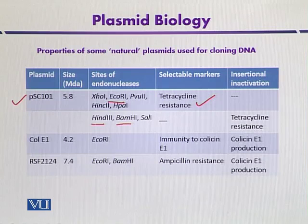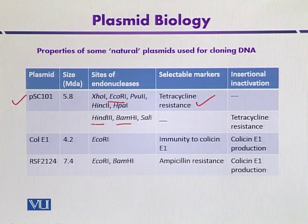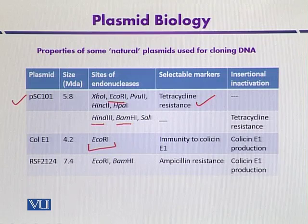Insertional inactivation is not used as a selectable marker for PSC-101. The next plasmid is ColE1, which is very famous. It contains a single restriction site for the enzyme EcoRI. It contains a selectable marker for immunity to Colicin E1, and at the same time also contains a gene that can mediate the production of Colicin E1.